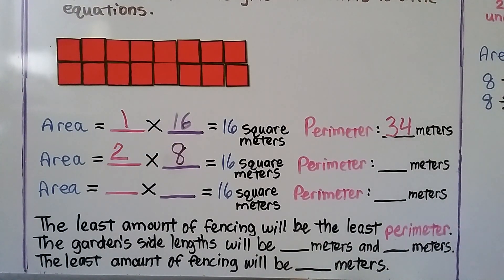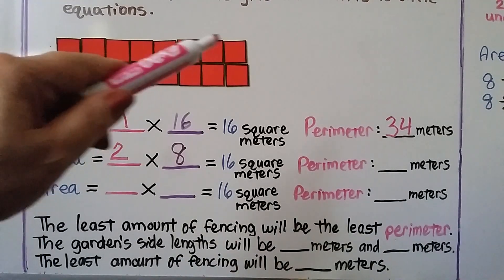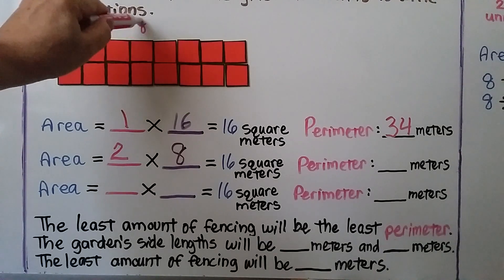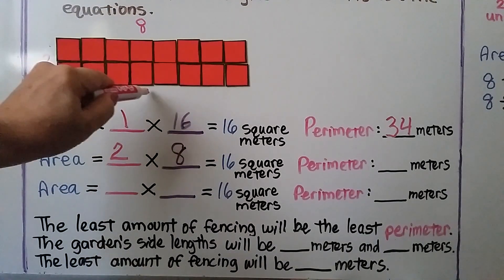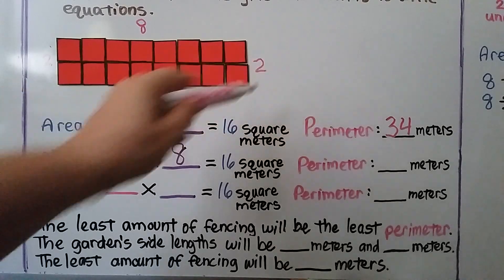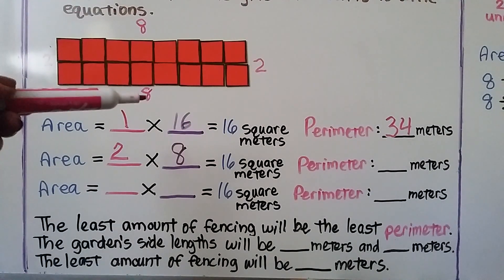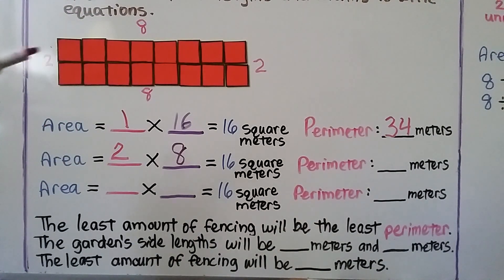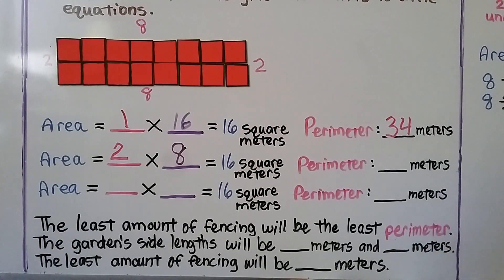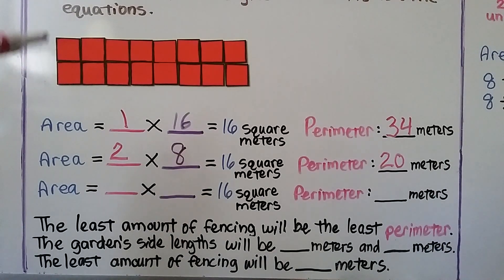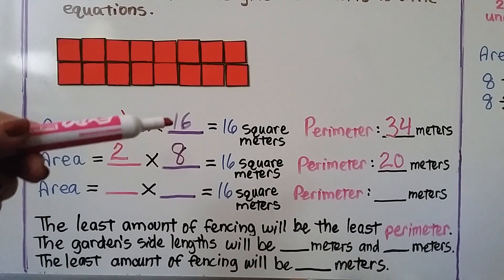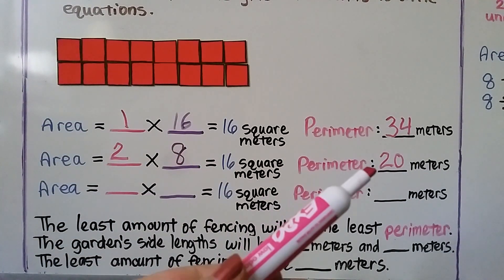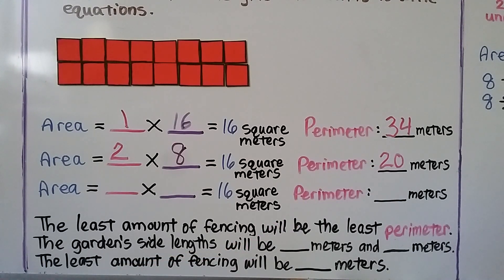What's the perimeter now? We've got 8 across the top, 2 on each side, and 8 on the bottom. So 8 plus 8 is 16, plus 2 plus 2 is 20. Our perimeter is 20 meters. When we increased the side length to 2, the width got cut in half — half of 16 is 8 — and the perimeter got smaller.